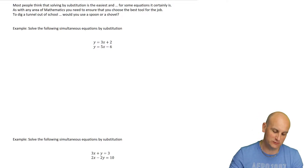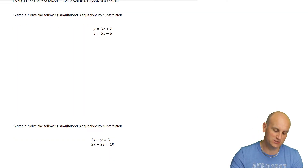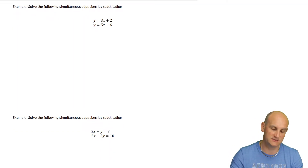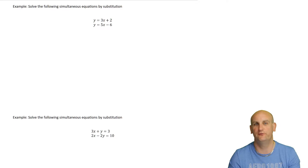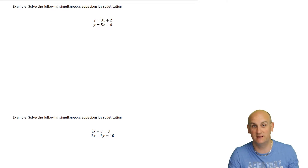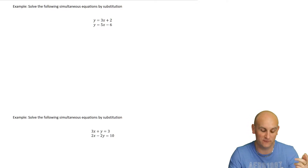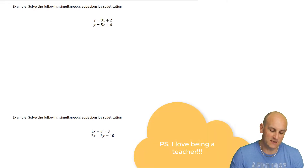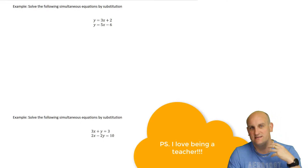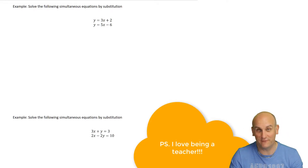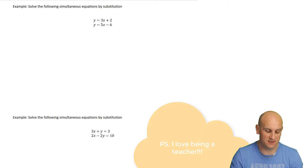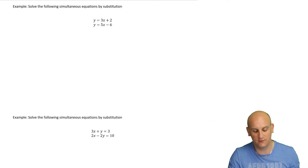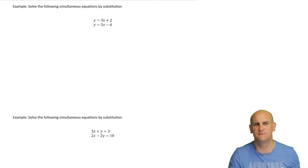You have to make sure you're using the right tool. To dig a tunnel out of school, would you use a spoon or a shovel? When the question states you've got to do a particular method, you have to do it. This question says: solve the following simultaneous equations by substitution.